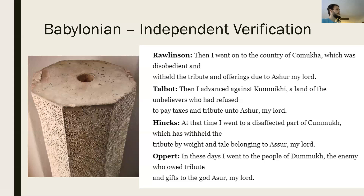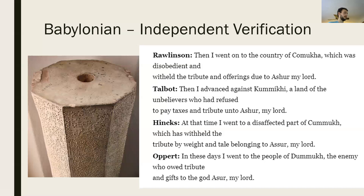Once these four archaeologists came back together, the resulting decipherments were very similar to each other. Rawlinson said that the text represents: "Then I went to the country of Kamukra, which was disobedient and withheld tribute and offerings to Ashur, my lord." And Talbot said: "Then I advanced against Kumiki, land of the unbelievers, who refused to pay taxes and tribute unto Ashur, my lord."